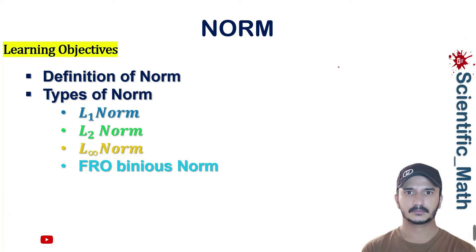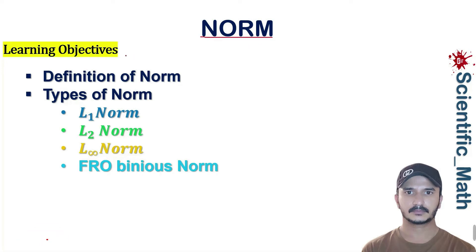Welcome to the YouTube channel scientists_math. In this lecture we will learn the norm of a matrix or a vector. The learning objectives are the definition of norm and types of norm. We will understand the concept of a norm with examples: L1 norm, L2 norm, and L-infinity norm. We will discuss the first three types of norms and solve related examples. In the next lecture we will discuss further. Let's start today's lesson.